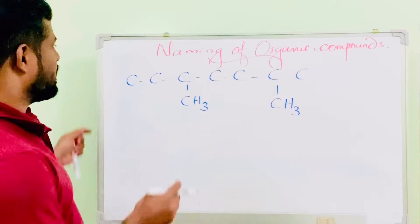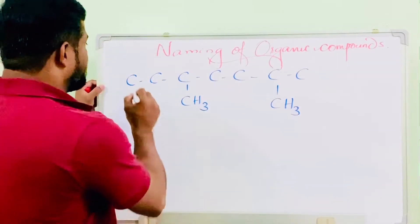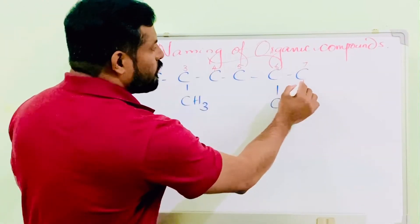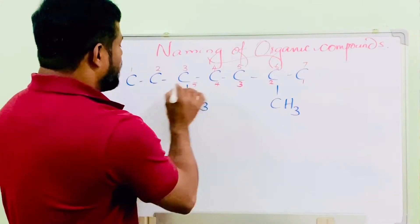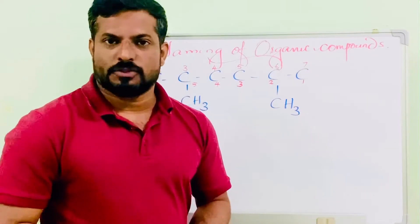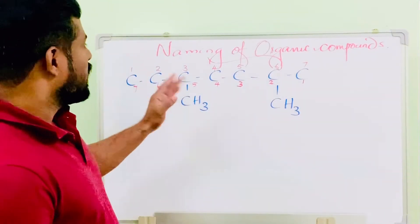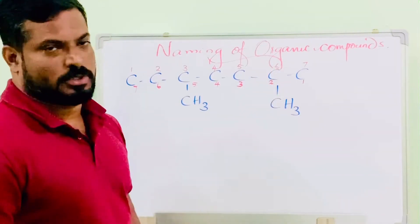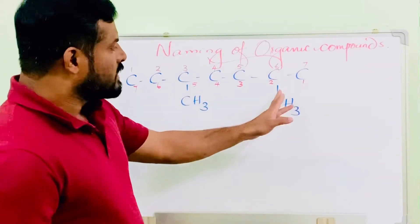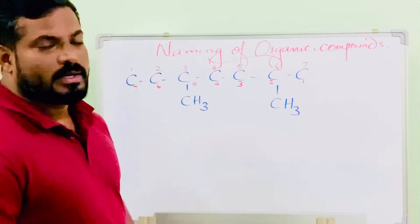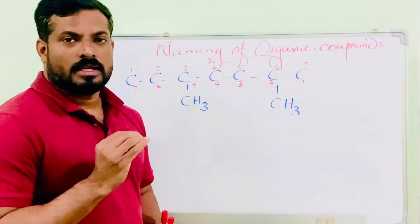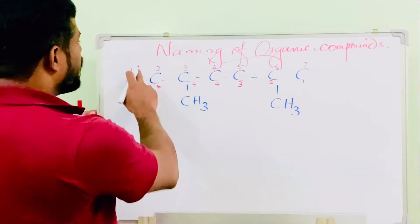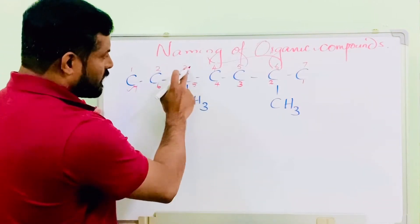Now let's check the second example. In this compound we are going to number from left to right and right to left: one, two, three, four, five, six, seven. Two ways of numbering are possible. In the first numbering direction, the third carbon has a substituent and the sixth carbon has a substituent. In the second numbering direction, the second carbon has a substituent and the fifth carbon has a substituent. According to our rule, substituents must possess the lowest number, so this second numbering is favorable.